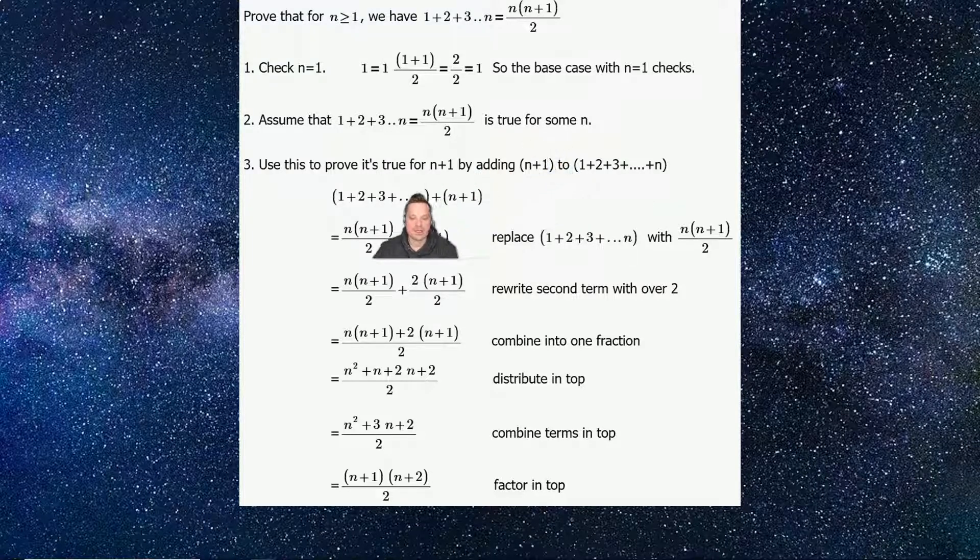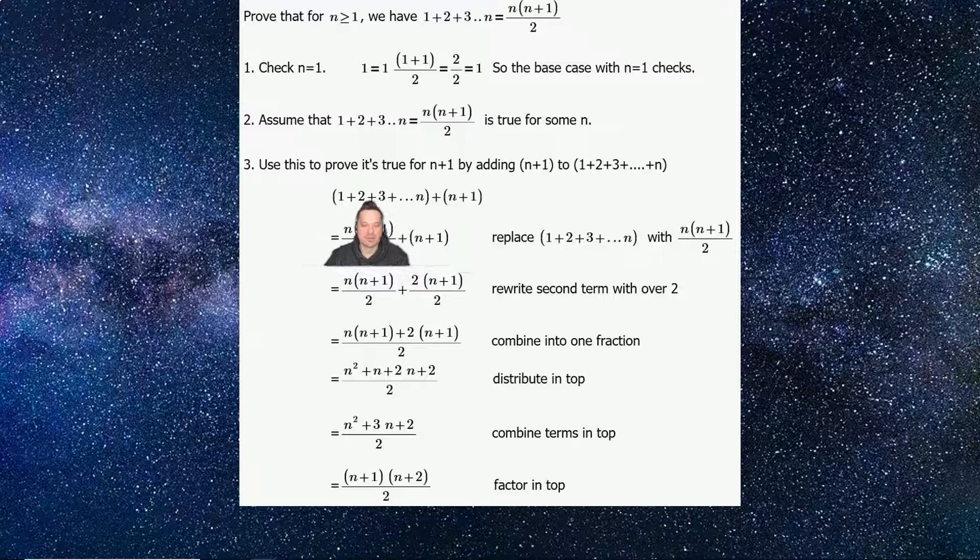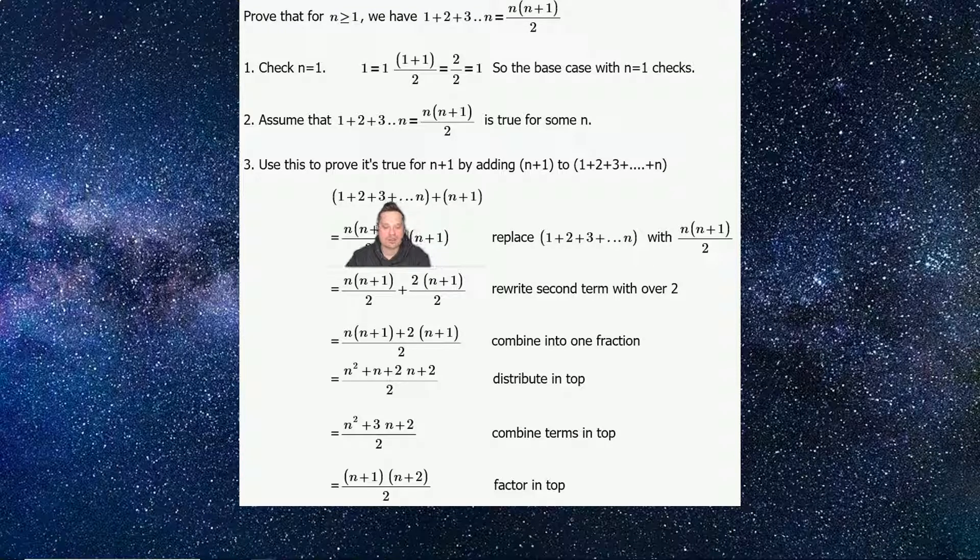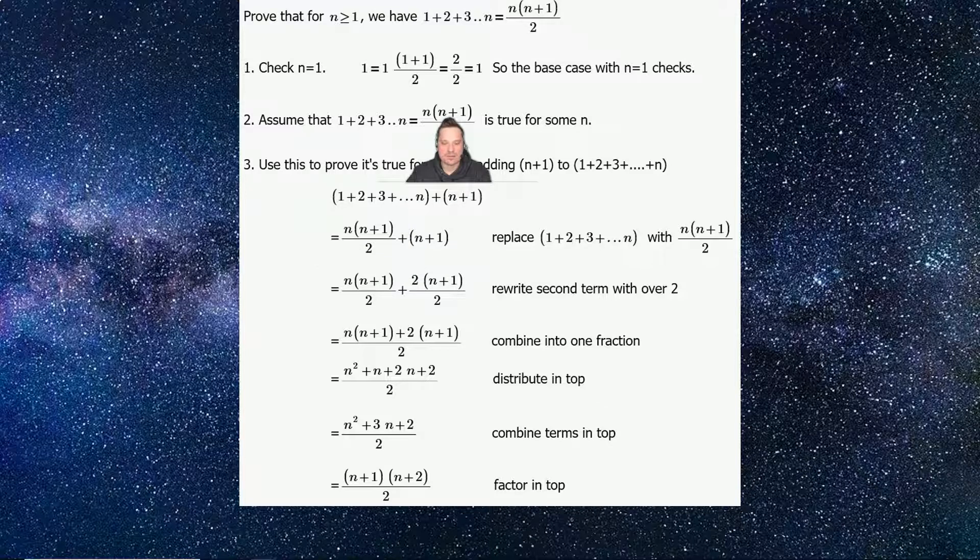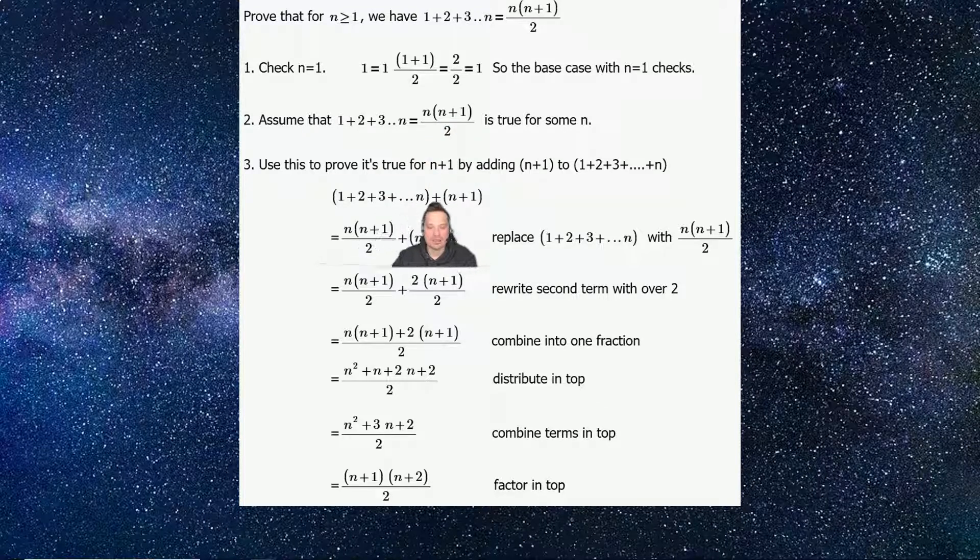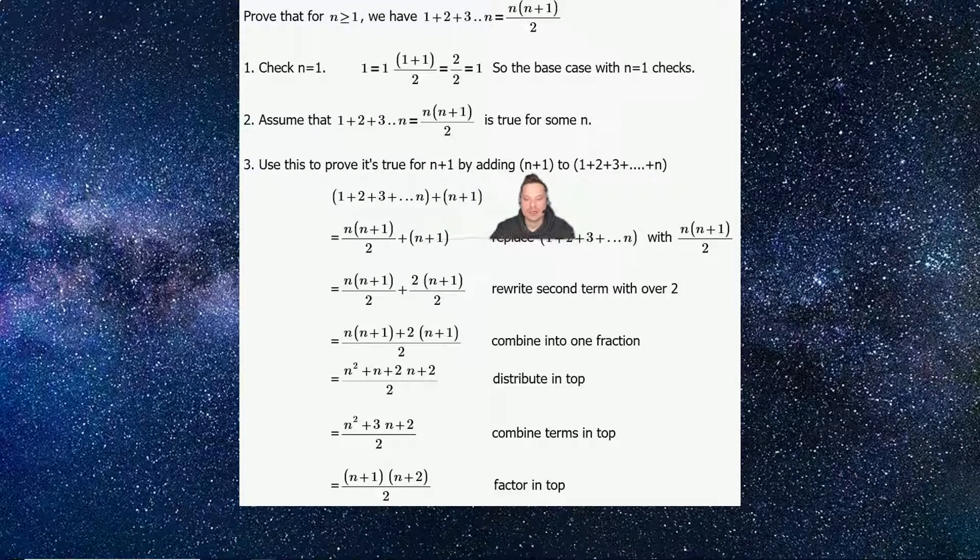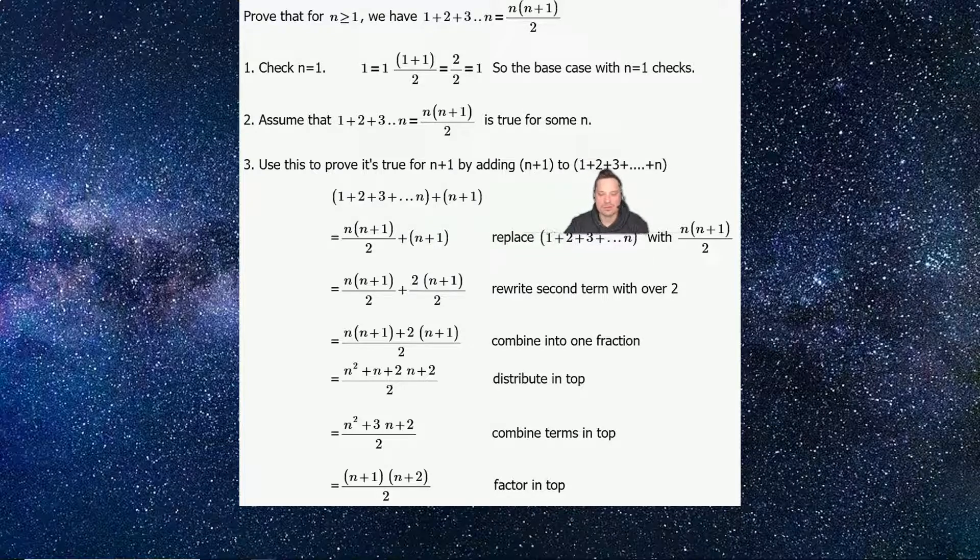What does that mean? So above my head, you see this expression that says 1 plus 2 plus 3, and then plus dot dot dot all the way up to n. So what you do is this first part above my head, that represents this, n times n plus 1 over 2. And then you're going to add n plus 1 to it. So that's exactly what this note says. Use this to prove it's true for n plus 1 by adding n plus 1 to 1 plus 2 plus 3 all the way up to n. That is what you need.